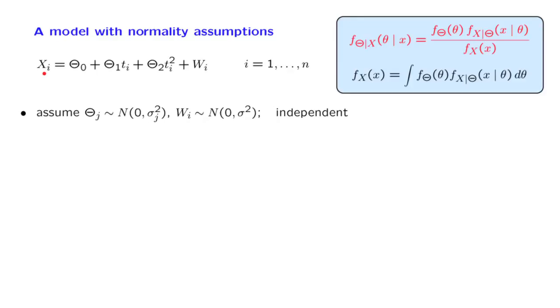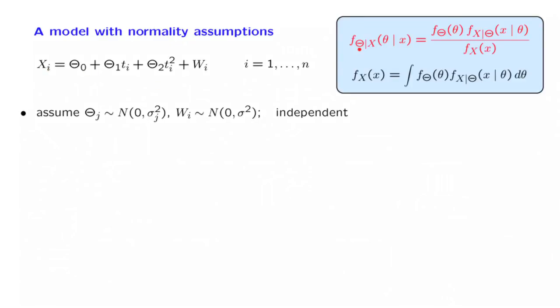We would like to estimate the theta parameters on the basis of the observations. We will use, as usual, the appropriate form of the Bayes rule, which is this one, the Bayes rule for continuous random variables. The only thing to notice is that, in this notation here, x is an n-dimensional vector because we have n observations. And theta, in this example, is a three-dimensional vector because we have three unknown parameters. So wherever you see a theta or an x without a subscript, it should be interpreted as a vector.